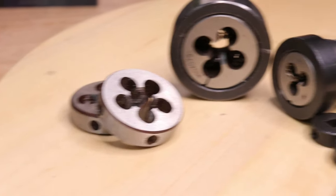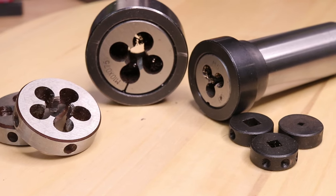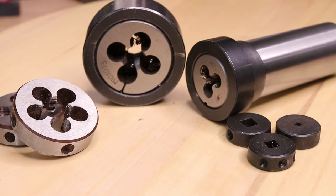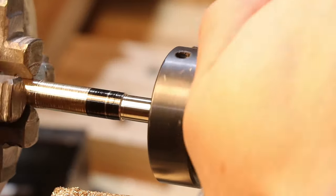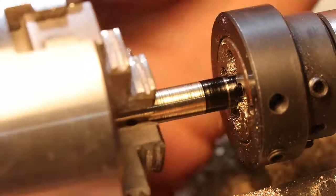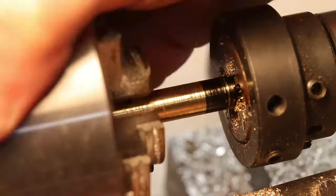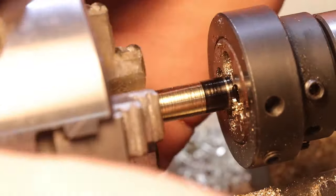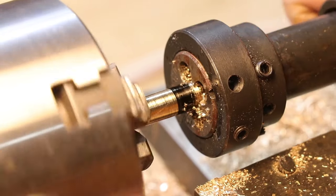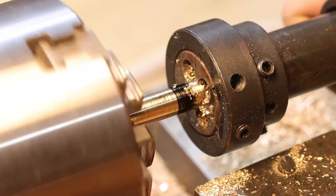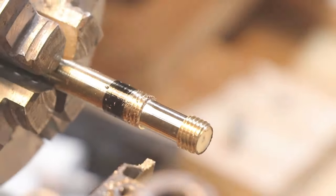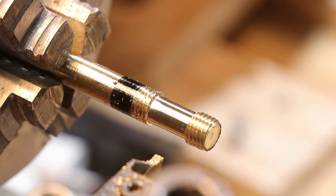Another thread cutting accessory is a tailstock die holder. These can be very easily machined on the lathe, but I bought this one on sale for a great price. It holds all common sizes of button dies, and can fit square tap heads too, but I do prefer to use a tap wrench for tapping threads. This tool is very useful, and considering that I don't cut threads using the lead screw anymore, this is probably one of the most used accessories that I have.